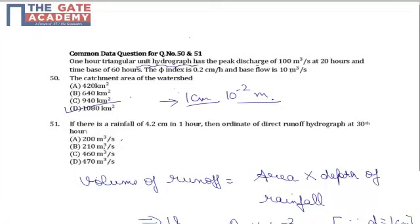It has a peak discharge of 100 meter cube per second and base period of 60 hours. If this is base period 60 hours, it is having a peak discharge of 100 meter cube per second and it is a 1 hour 1 centimeter hydrograph. It is asked what is the catchment area of watershed.